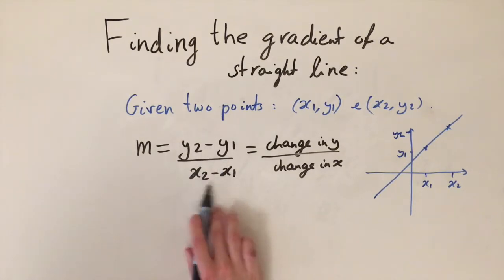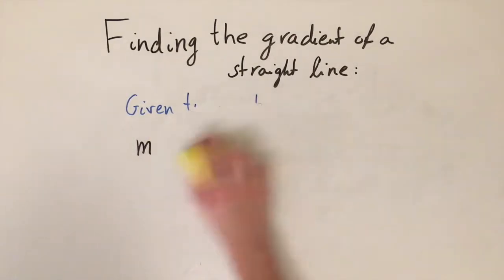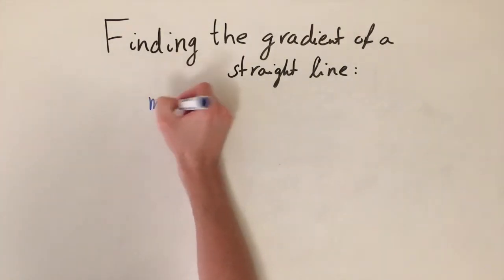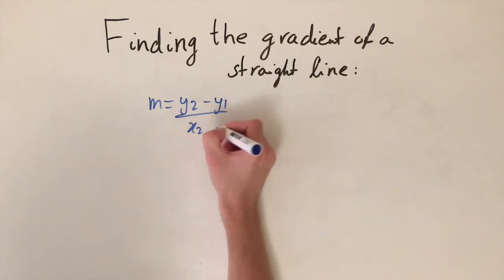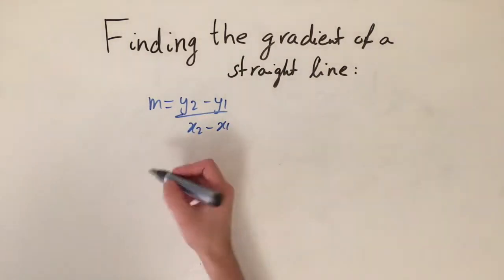It's also important to note that the order really matters here. So if we do y2 minus y1, then we have to do x2 minus x1. We can't just switch them about. So now we're going to look at a few examples of how to calculate this. I'll just write it out again: the gradient is given by y2 minus y1 over x2 minus x1.